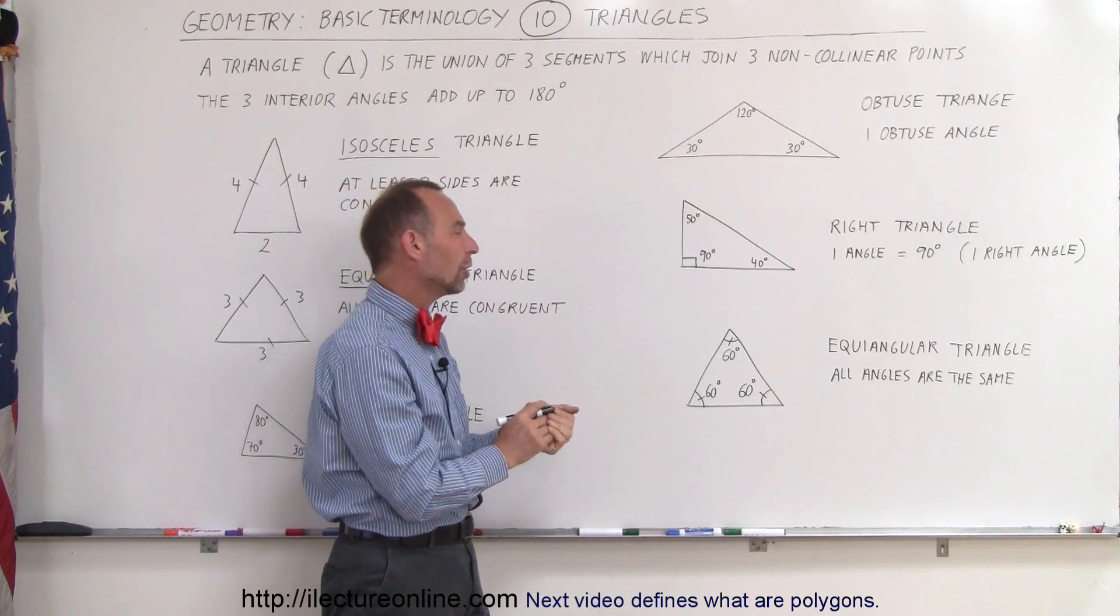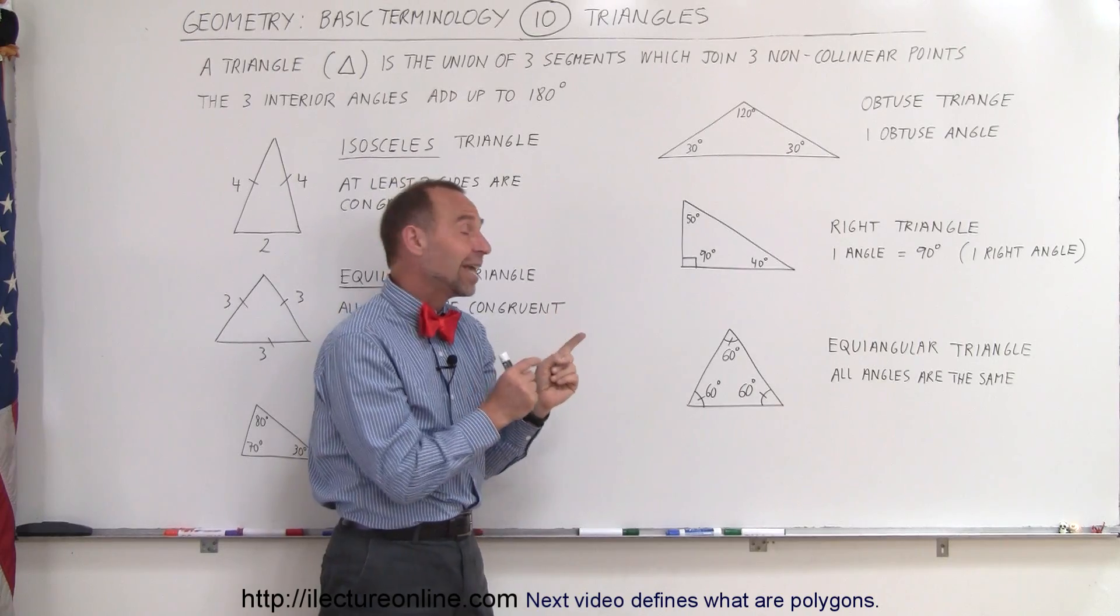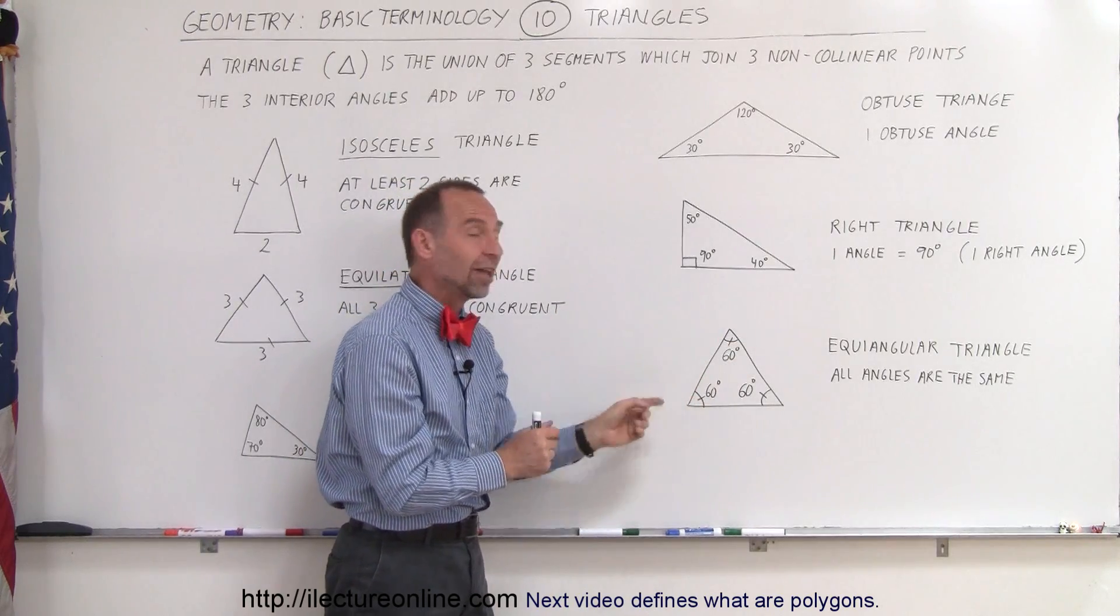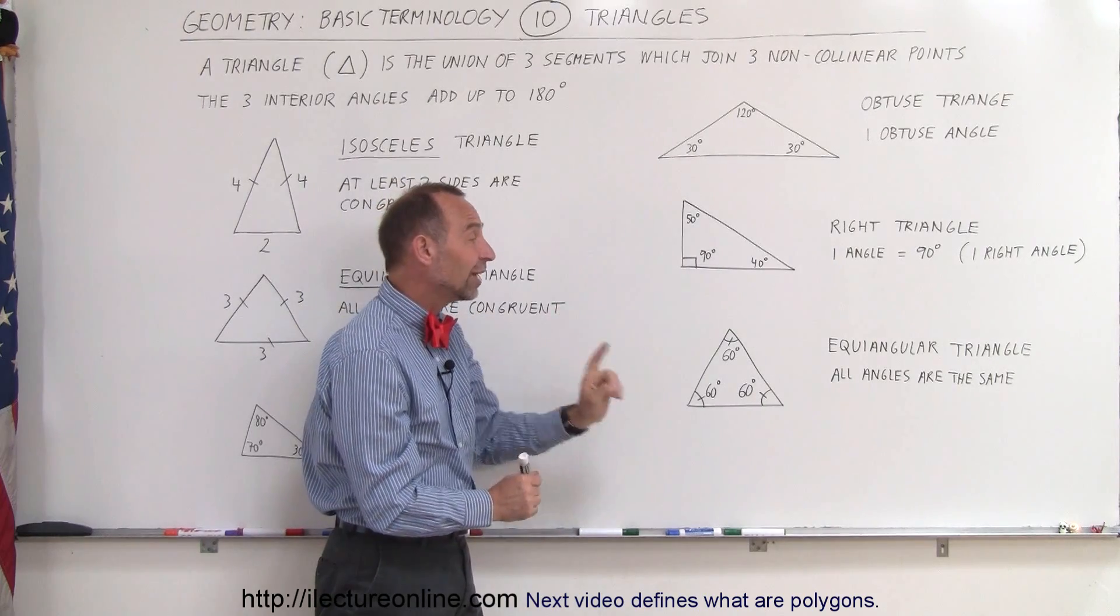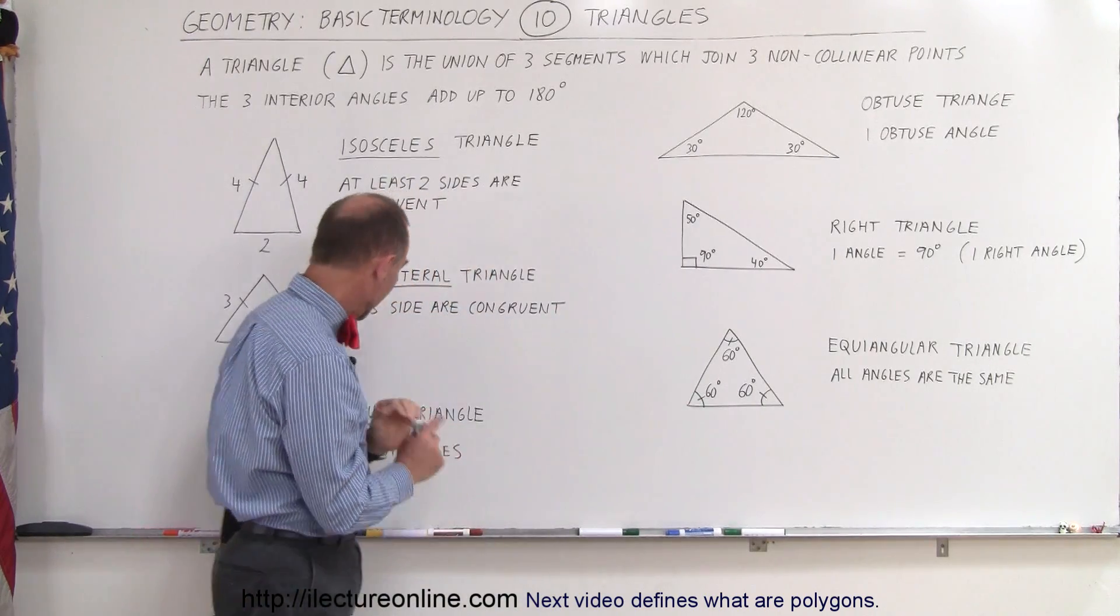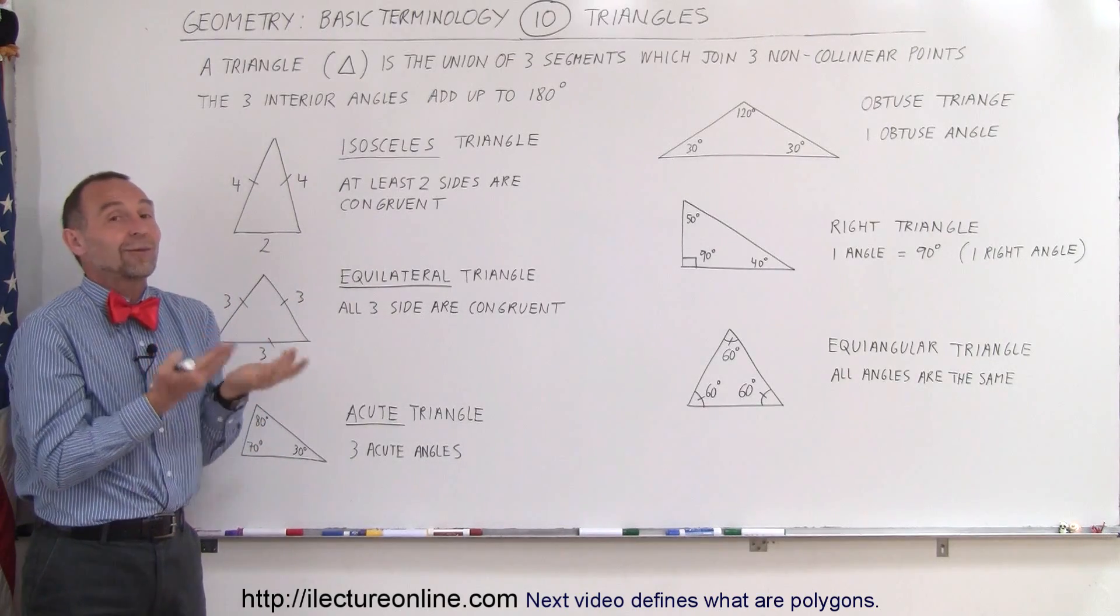And finally we have what we call an equiangular triangle. A triangle that has the same three angles - all three angles are the same. By necessity that must be 60 degrees, because they have to add up to 180 degrees. But notice that an equiangular triangle and back here an equilateral triangle by necessity are the same triangle,